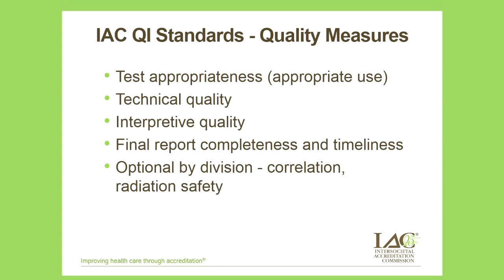The quality measures that are part of the new QI standards include test appropriateness or appropriate use, technical quality, interpretive quality, final report completeness and timeliness, and an optional measure determined by each division — which may be correlation with other modalities or safety-related measures such as radiation safety.